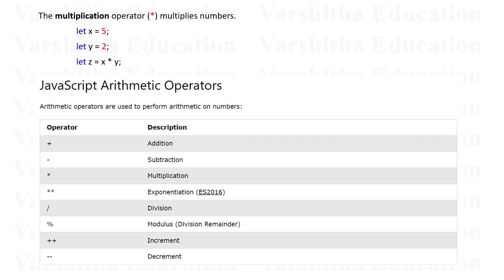Exponentiation means x squared — for example, 2 squared, 3 squared, 4 squared. We can compute 2 to the power of 3 or 5. The percentage sign is the modulus operator. Plus-plus n is the increment operator, and minus-minus n is the decrement operator.